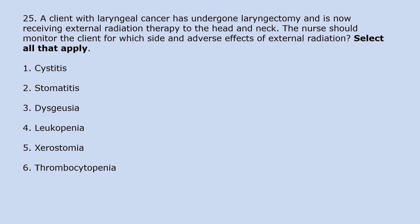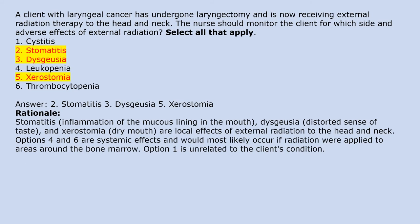A client with laryngeal cancer has undergone laryngectomy and is now receiving external radiation therapy to the head and neck. The nurse should monitor the client for which side and adverse effects of external radiation? Select all that apply. 1. Cystitis. 2. Stomatitis. 3. Dysgeusia. 4. Leukopenia. 5. Xerostomia. 6. Thrombocytopenia. Answer: 2. Stomatitis, 3. Dysgeusia, 5. Xerostomia. Rationale: Stomatitis (inflammation of the mucous lining of the mouth), dysgeusia (distorted sense of taste), and xerostomia (dry mouth) are local effects of external radiation to the head and neck. Options 4 and 6 are systemic effects occurring with radiation to bone marrow areas. Option 1 is unrelated to the client's condition.